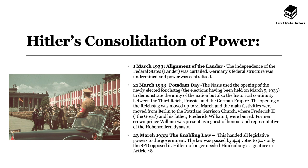The opening of the Reichstag was moved to 21st March and the main festivities were moved to the Potsdam Garrison Church, where Frederick II — known as Frederick the Great — and his father Frederick William I were buried. Former Crown Prince William was present as a guest of honour and representative of the Hohenzollern dynasty.